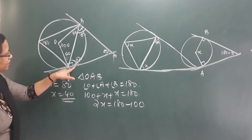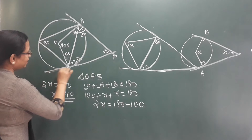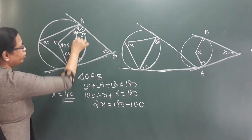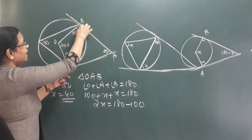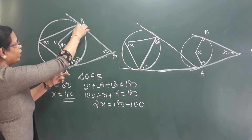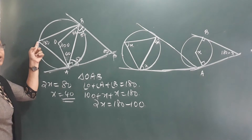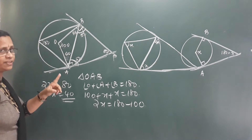Now, what do we call it? This tangent and chord angle is 50. The angle is 50. The angle with an angle is equal to the two endpoints. The angle is equal to r.